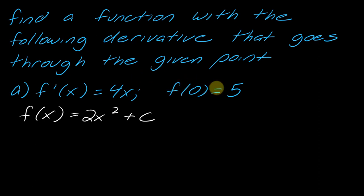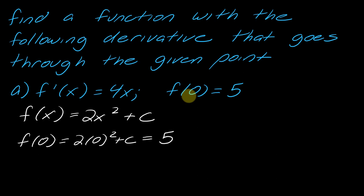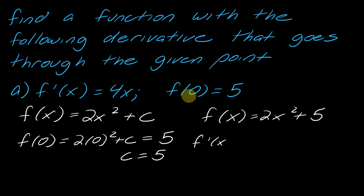Using the given point, I get f of 0 equals 2 times 0 squared plus c, and that has to equal 5. So c must equal 5. Therefore the function is f of x equals 2x squared plus 5. And you can see if you take the derivative of this, you get back to 4x, which is what we wanted. So now I have something that fulfills both conditions — that's the game we're trying to play here.